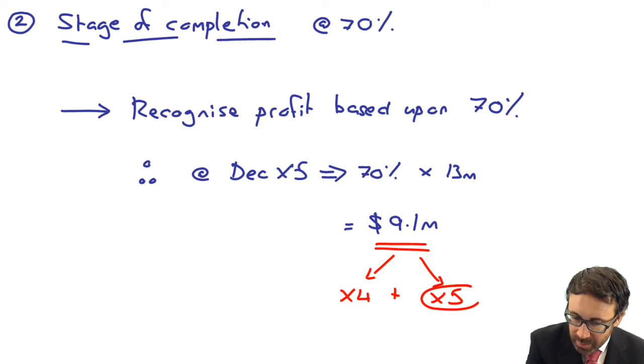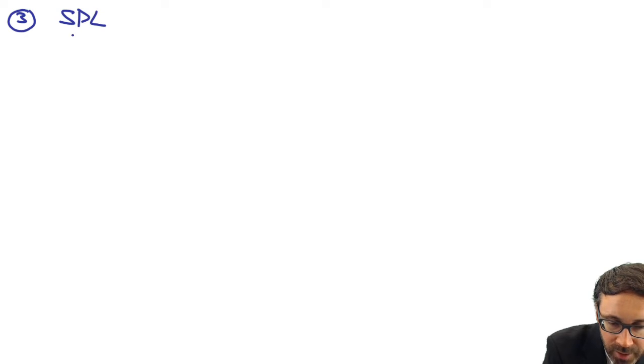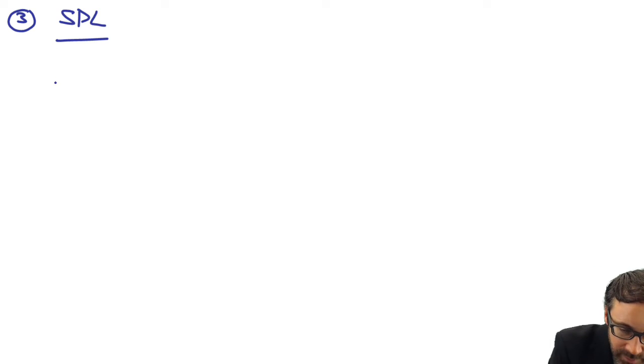So that there is what's going to be recognized in X4 and X5 in total. We need to work out from the statement of profit or loss perspective, what is just going to be recorded in X5. Remember, the statement of profit or loss is for the period ended. So it's going to show us that 12 month period from the 1st of December X5 to the 31st of December X5. So once we've done that, we can then go through and look at the statement of profit or loss. So again, what I do is I would look at my revenue, I would look at my costs, I would look at my profits.